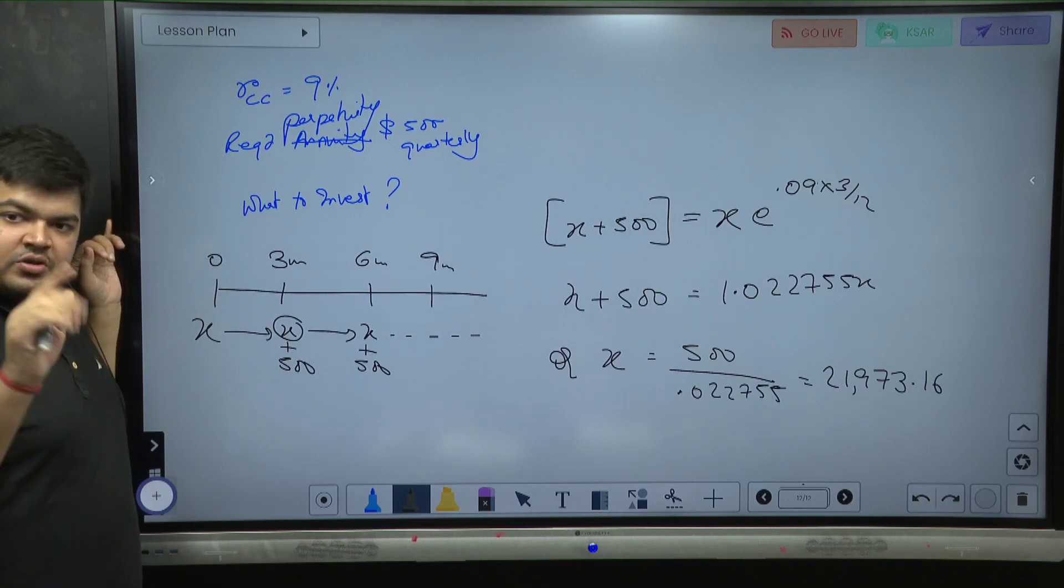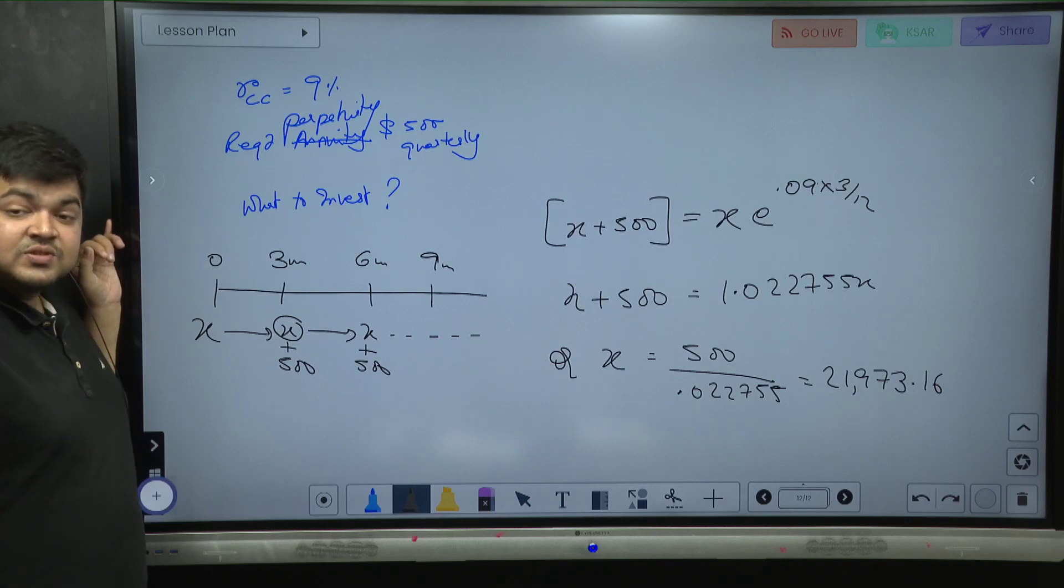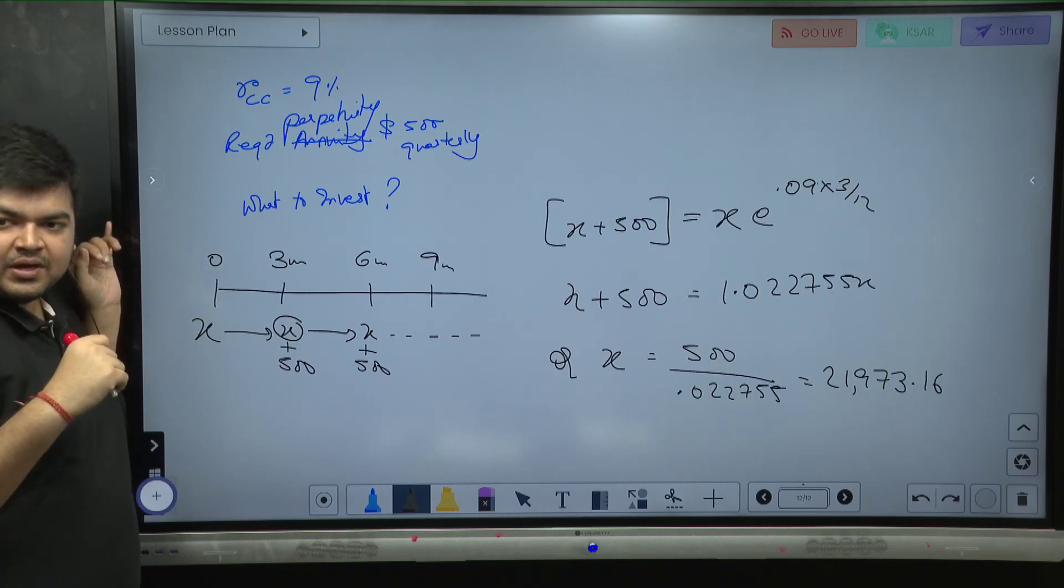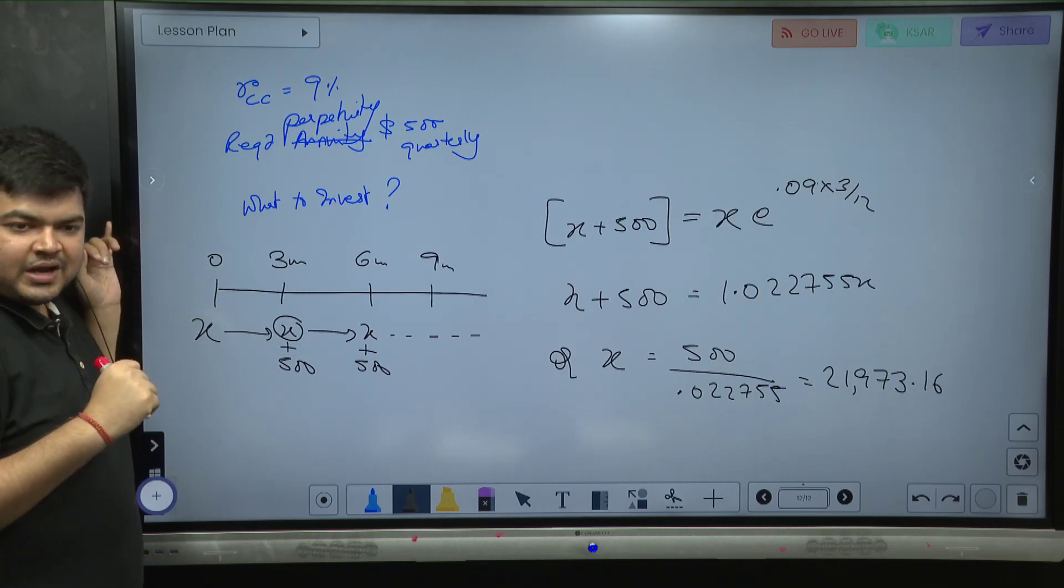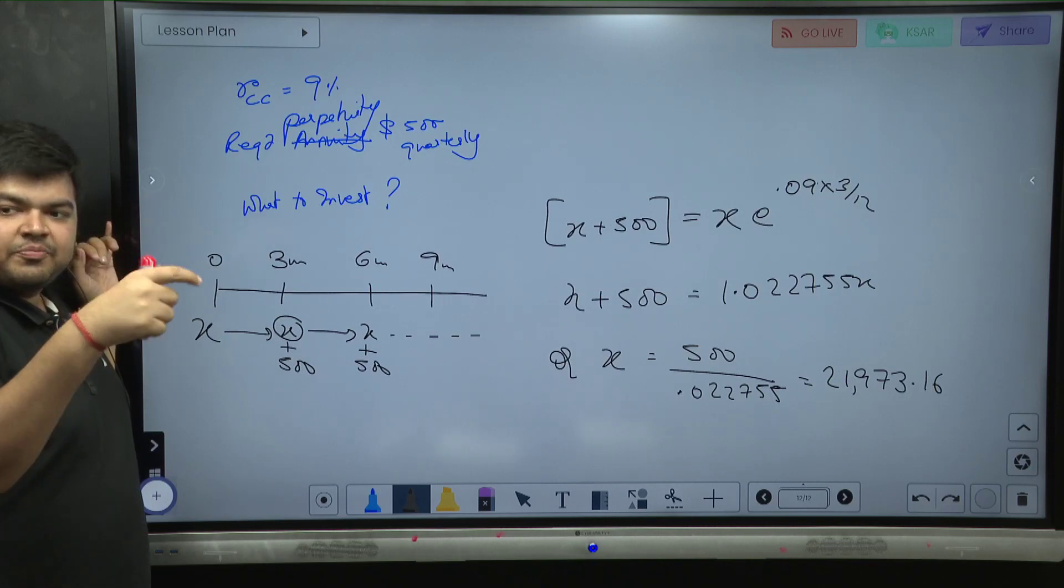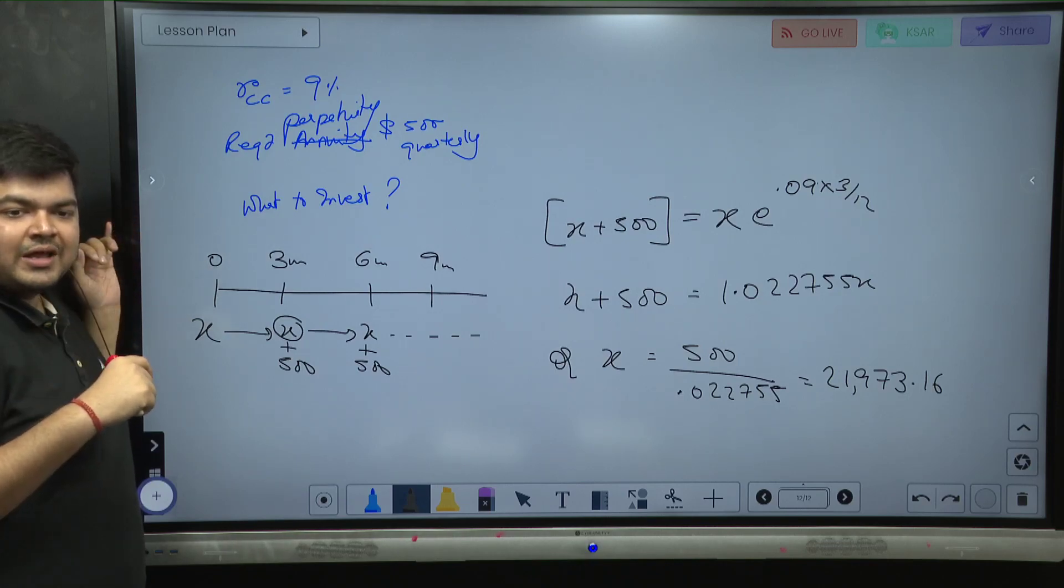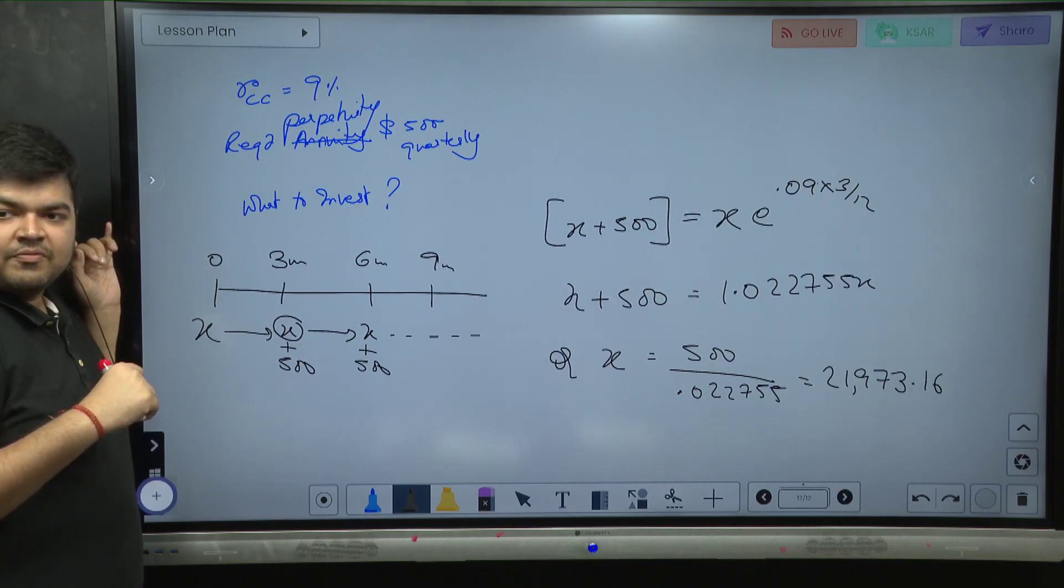Approximately your per annum interest rate is 9%. You're getting 500 about four times in a year. So even if I assume simple interest basis for the time being, I'm requiring 2000 per annum. So 9% of principal is 2000. 2000 by 9% will not be 5000.